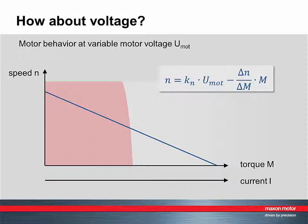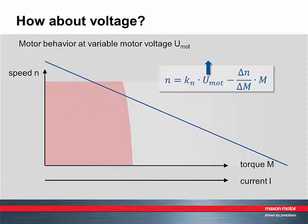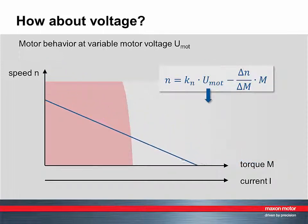What's the influence of the applied motor voltage? Essentially, if the motor voltage is changed, the speed torque line moves in parallel. At higher voltages, the line moves up. At lower voltages, the line moves down.